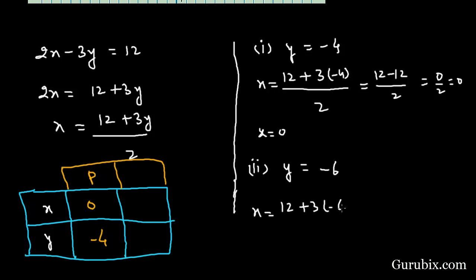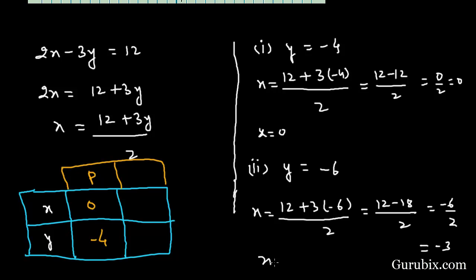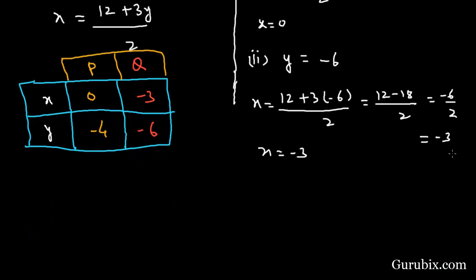Now we put y = -6: x = (12 + 3×(-6)) / 2 = (12 - 18) / 2 = -6 / 2 = -3. So when y = -6, x = -3. We denote this point as Q. The coordinates of P are (0, -4) and the coordinates of Q are (-3, -6).